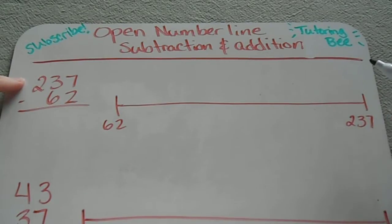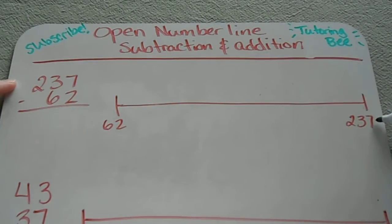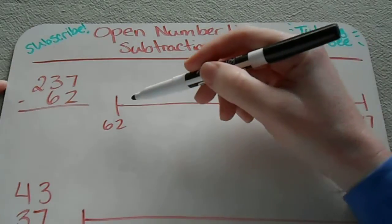So my subtraction problem is 237 minus 62. I'm going to start at 62 and I've got my 237 here. That's my goal and I'm going to make jumps until I get to 237 and I'm going to record them on this number line.